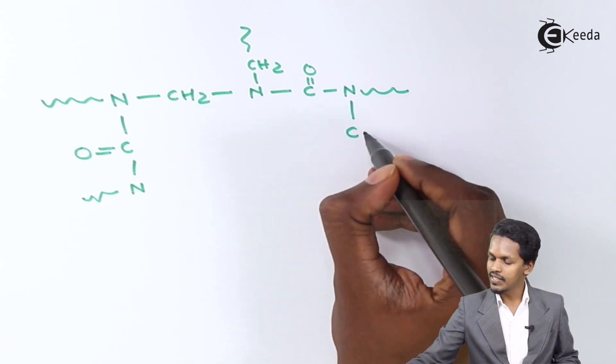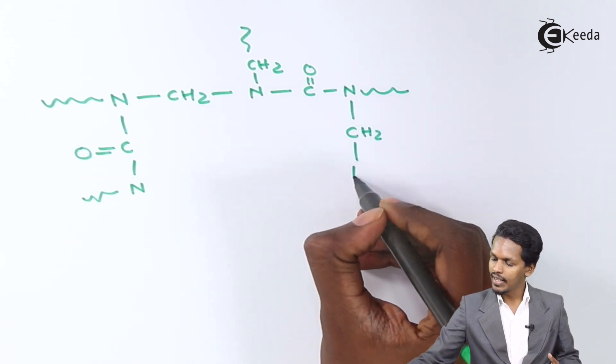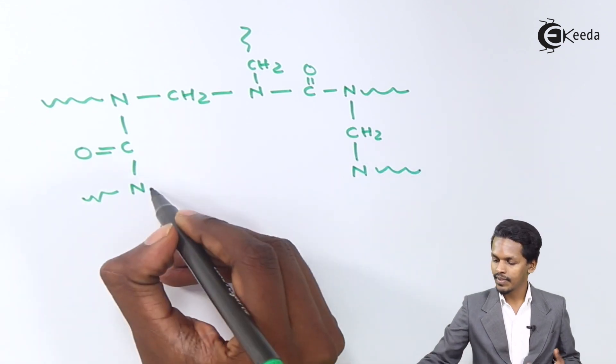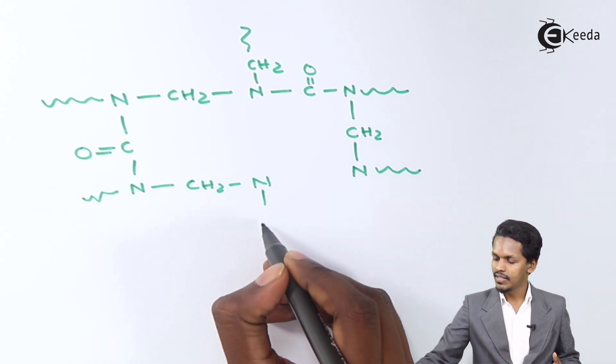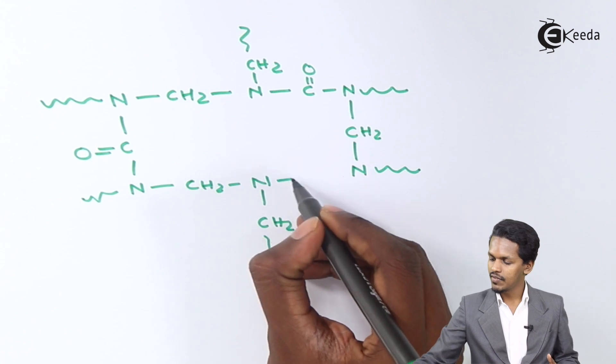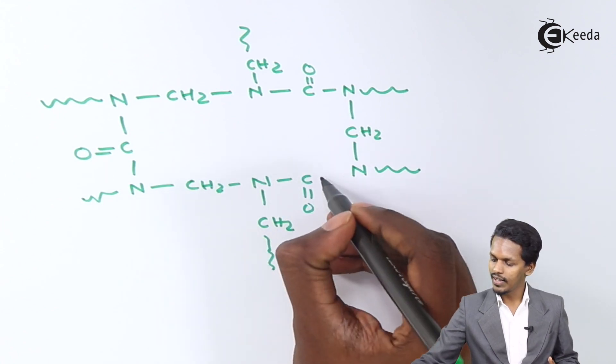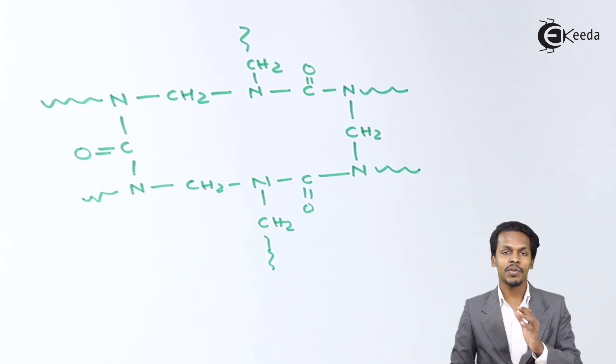And this part will be C double bond. It will be CH2. And now this part will be N. And this one will be CH2, CH2, and CH2. This one will be C double bond O. And this is the structure. So this is the structure, and the name of this structure is known as urea-formaldehyde polymer.